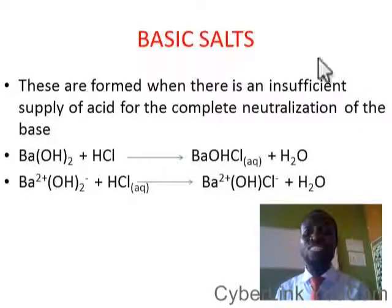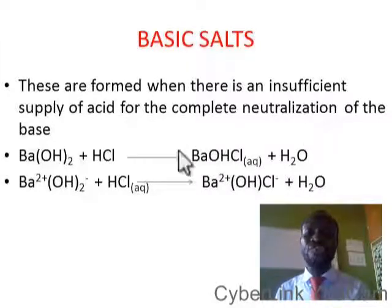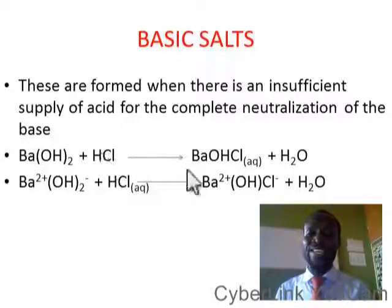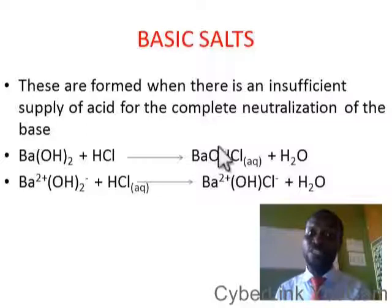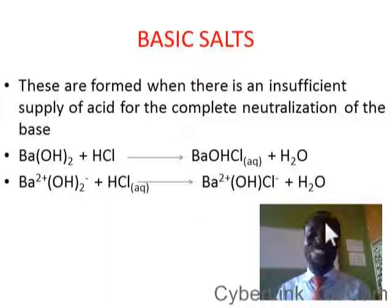Basic salt. Basic salts are formed when there is an insufficient supply of acid for the complete neutralization of a base. For example, barium hydroxide plus hydrochloric acid gives us barium hydroxide chloride. It is a basic salt because there is an OH group present. This is the ionizing equation. With this, you should be able to know what normal salt is, what acid salt is, and what basic salt is.